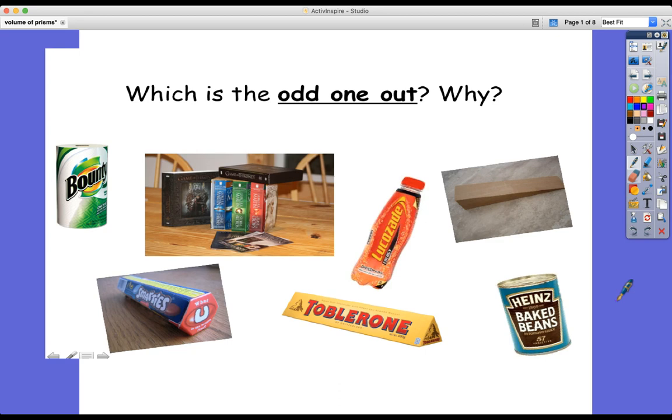Did you spot it? It is of course the Lucozade bottle. The reason being that it's not a prism. The rest of the shapes are prisms because they have the same shape as their cross section, which is that, you know, here it's the right angle triangle, which is exactly the same shape as the other side of the shape. Much more easy to see is perhaps this tin of beans. It's got the same circle on either end of it, just like the Toblerone, the same triangle has been maintained across the whole length of the shape.